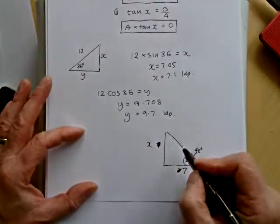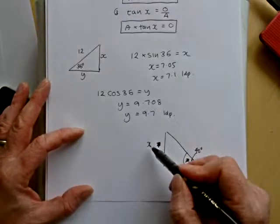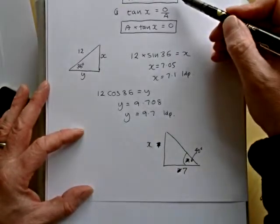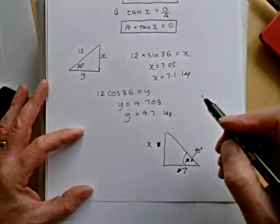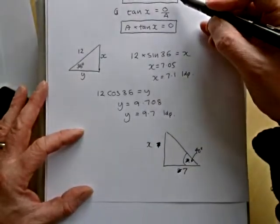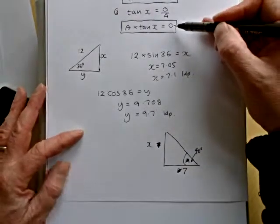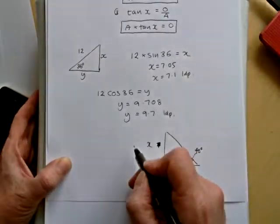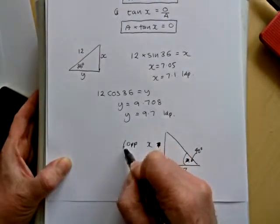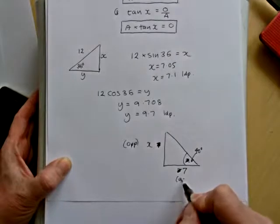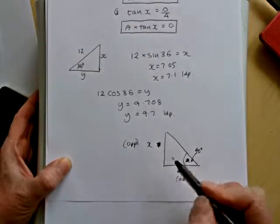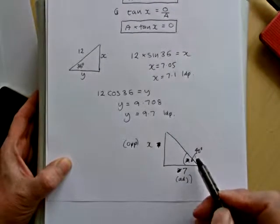Right. So we've got, we're trying to find the opposite side. And it's not a bad idea to label these. You can see I was getting a bit confused there. So, opposite and adjacent. We're trying to find the opposite side, but we're given the adjacent and angle.